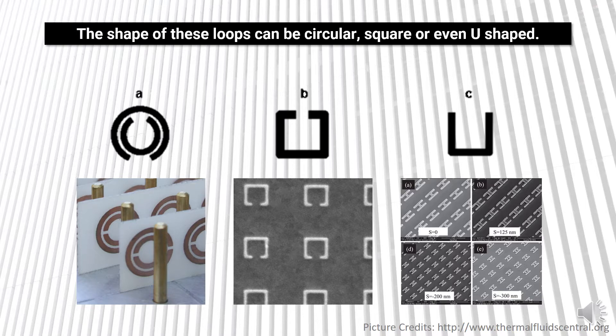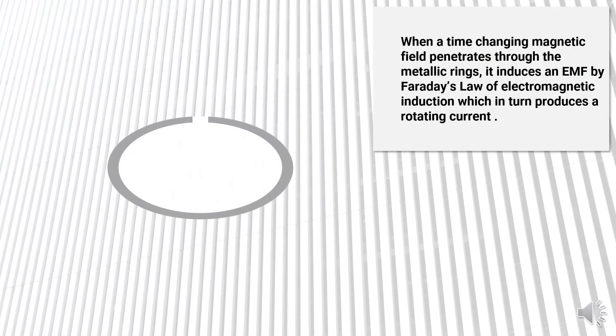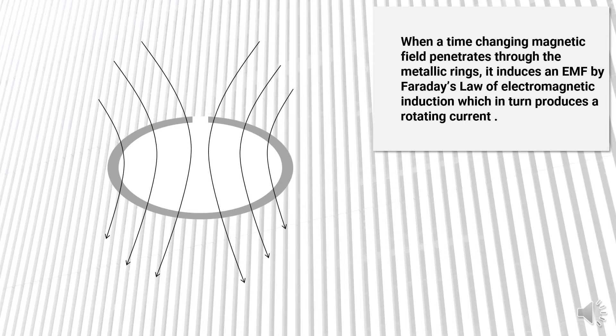Usually the circular one is the most used one. So now let's see how this SRR actually works. Here we have the split-ring resonator. When a time-changing magnetic field penetrates through the metallic rings, it induces an EMF because of Faraday's law of electromagnetic induction.